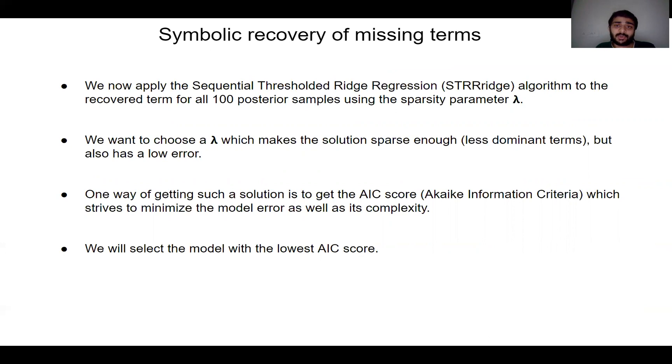For this, we obtain a sequentially thresholded regression algorithm. We choose a sparsity parameter lambda and to finally choose the model, we get the AIC score or the Akaike Information Criteria for different choices of lambda. And we'll finally select the model with the lowest AIC score. This table shows that as lambda increases, the number of active terms in the model decreases because the sparsity increases. And finally, we see that the model with the lowest AIC score has just one dominant term, U1 into U2, which is exactly what we have in the ground truth data. The model was found to be M of U1 into U2 equal to 0.96 U1 into U2, which is very close to the ground truth solution of U1 into U2.